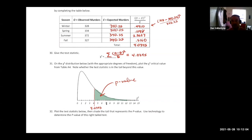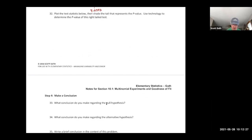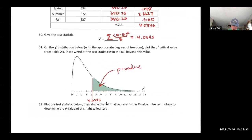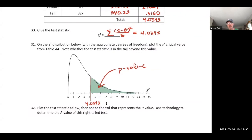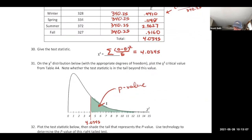Summer has by far the largest chi-square contribution at 2.9627 — it's the season least fitting the equal-proportion model. You could isolate summer and compare it to the rest of the year as a binomial test, and that alone might trigger rejection of the null. But in the full four-season test, the overall statistic of 4.0345 is not large enough. The p-value looks very large from the graph.